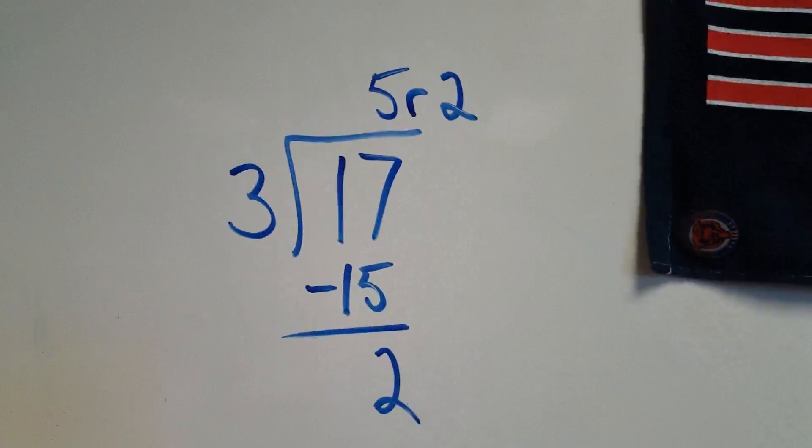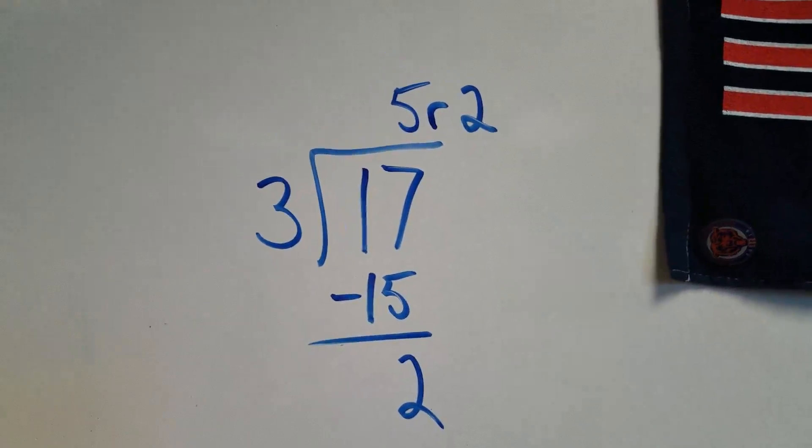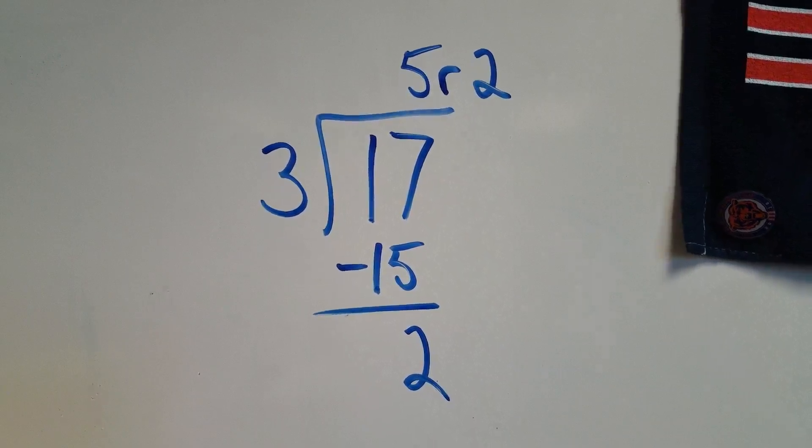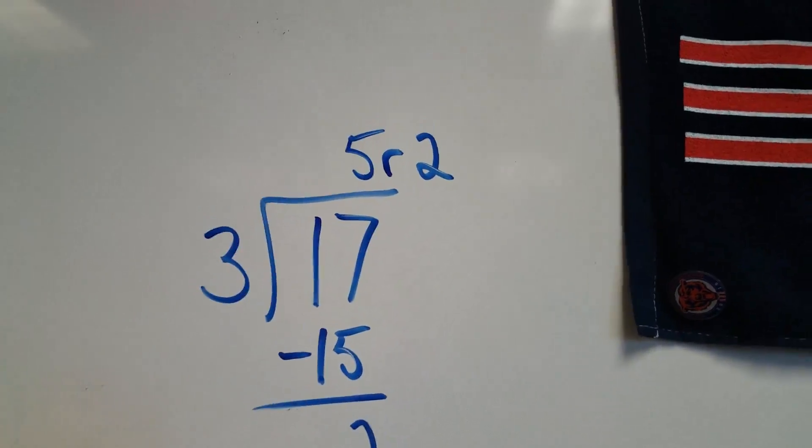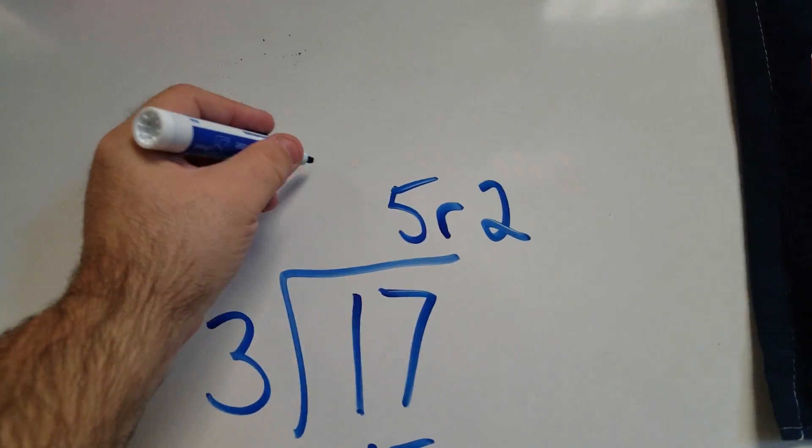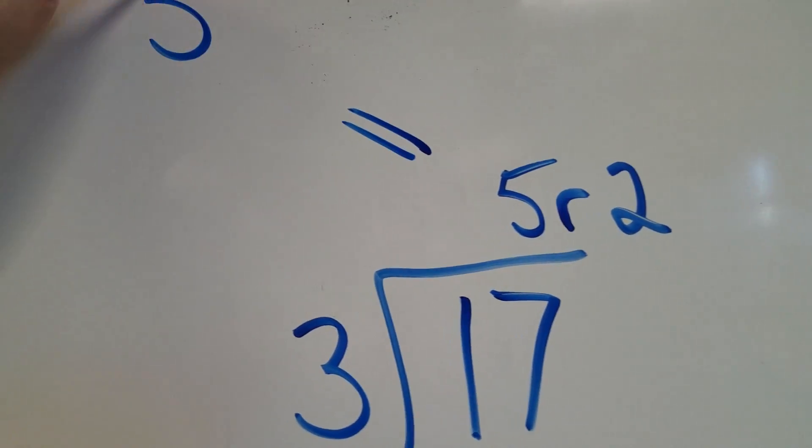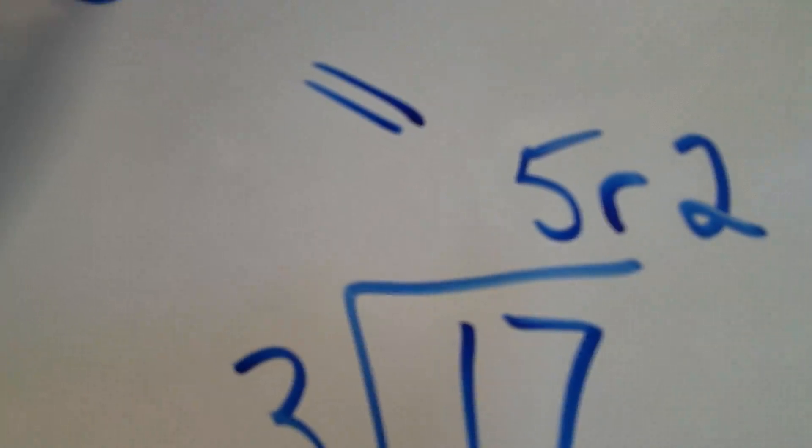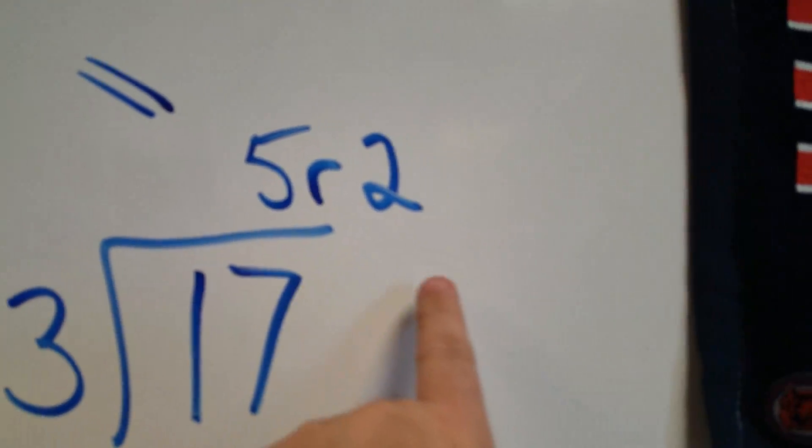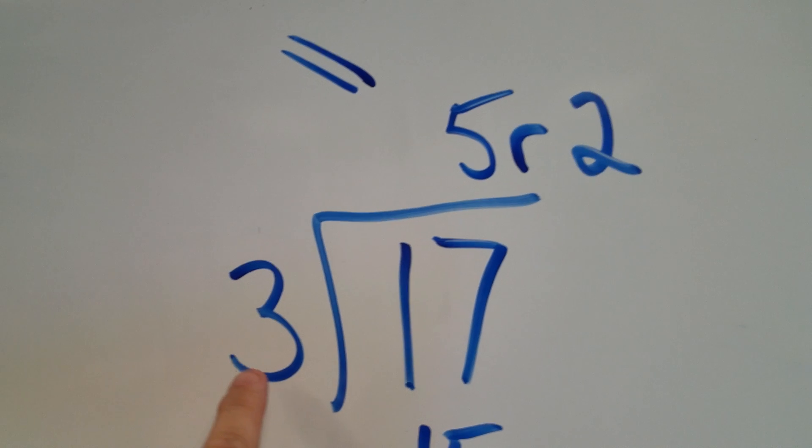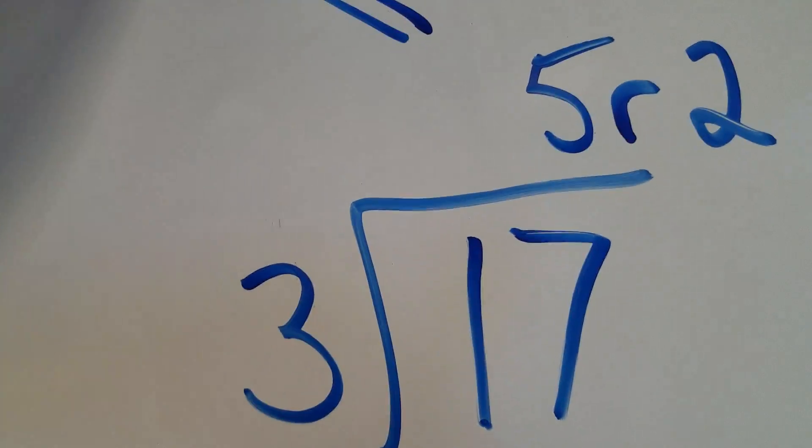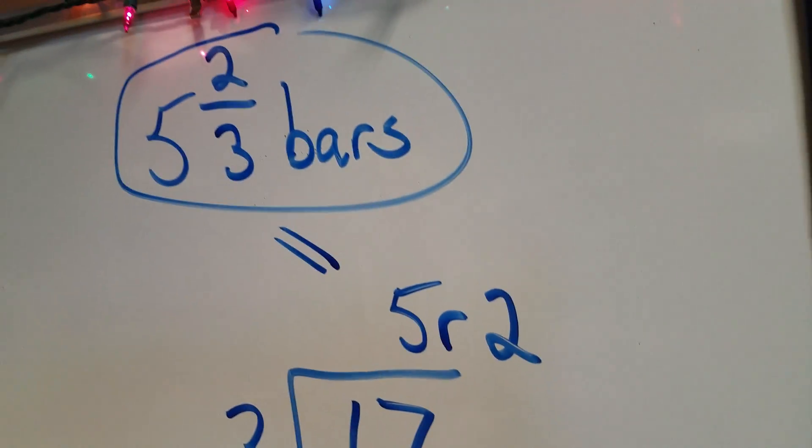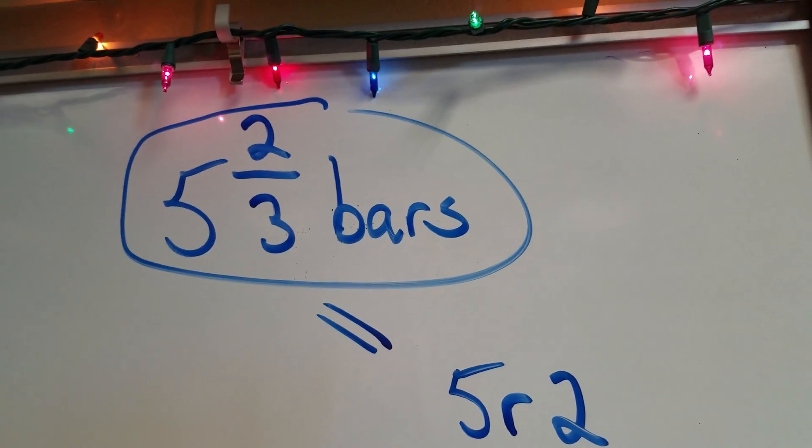Now, wait a minute. That's silly. I can't say, okay, guys, each one of you gets 5 bars, remainder 2. That doesn't make any sense. So I need to interpret that remainder. Here, I can say, well, that's 5 whole bars. If I take my remainder, my remainder of 2, and I put that over my divisor, then my answer is I will give each one of them 5 and 2 thirds of a bar.